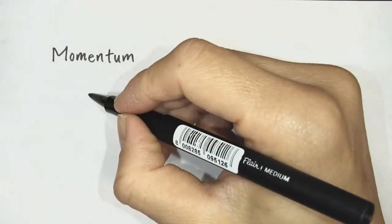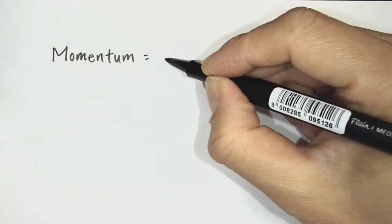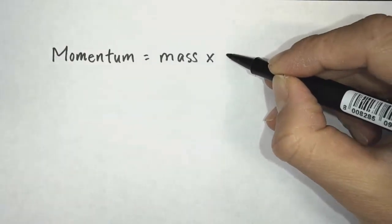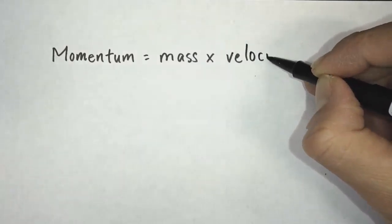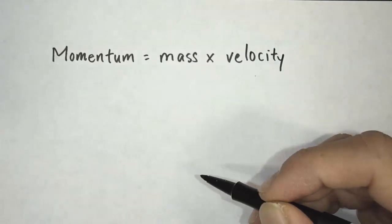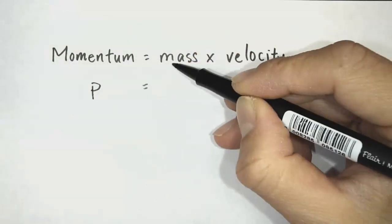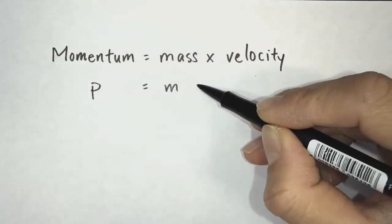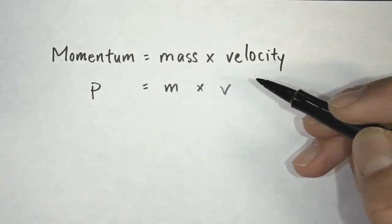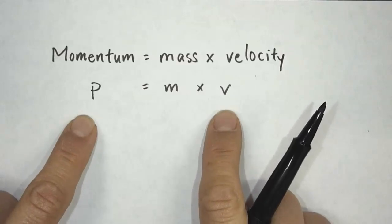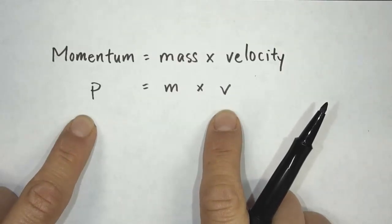So the equation for momentum is mass times velocity. And the symbol for momentum is P. For mass, the symbol is M. The symbol for velocity is V. And because momentum and velocity are vectors, they have a direction.